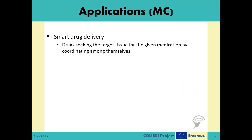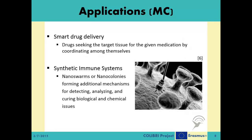Another potential MC application is smart drug delivery systems. When we swallow a drug, in most cases it doesn't only affect the sick tissue, but also affects other healthy ones. In some cases, the drug actually harms the healthy ones. Instead, smart drugs can be utilized, which can seek the target tissue by communicating among themselves and the environment, and are only released if they are near the desired tissue. Lastly, as a generalization of the preventive health monitoring mechanisms mentioned before, a vast number of nanomachines can form synthetic immune systems that can try to prevent diseases without macroscale human intervention at all.